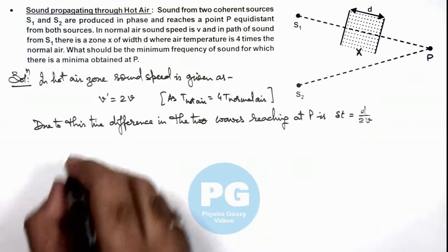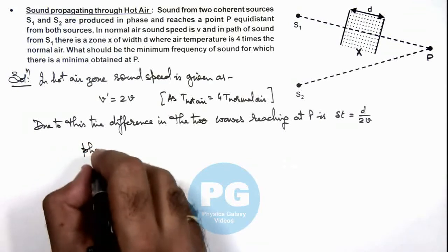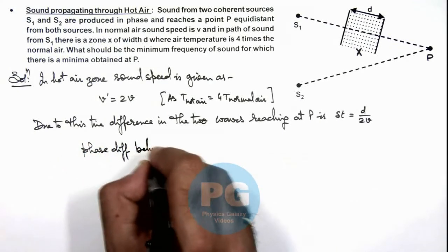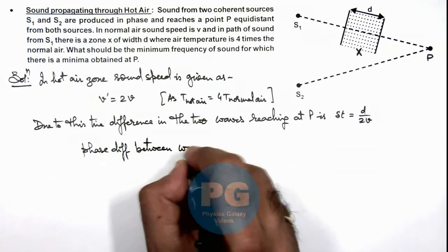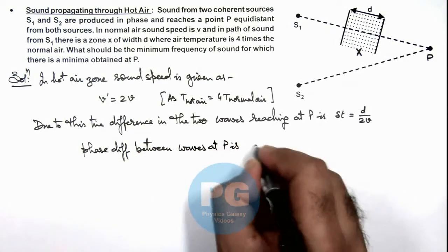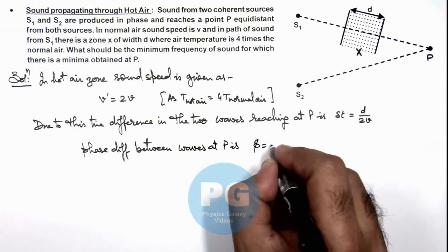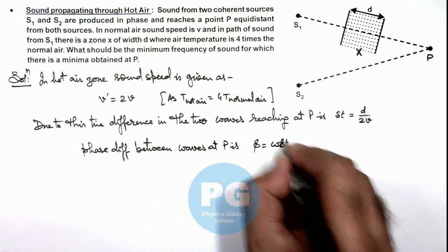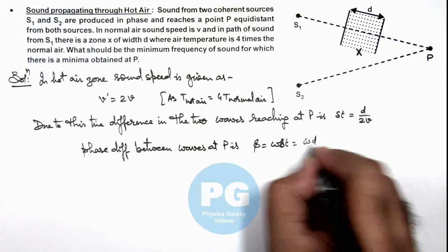So here we can calculate the phase difference between waves at P. This phase difference we can write simply as ω Δt, that will be ω d by 2v.